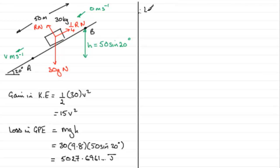So therefore, the loss in energy has got to be equal to the loss in gravitational potential energy, which we saw was 5027.6961 and so on. And then we've got to subtract the gain in kinetic energy, which is 15v squared. Now, the point is, this loss in energy must be equivalent to the work done against the friction.